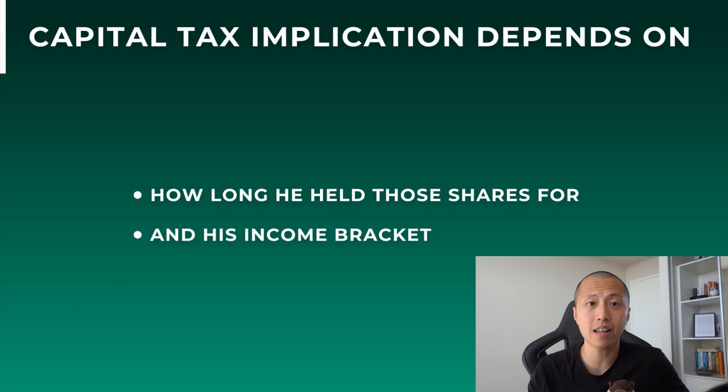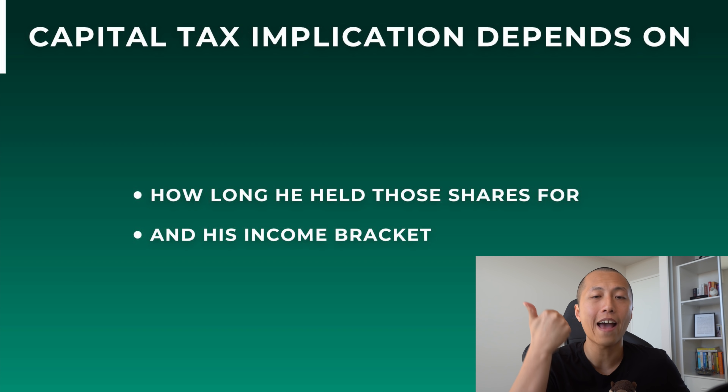For simplicity, we're going to use Otto as an example, and he only buys growth stocks with no dividends. Say Otto bought stocks and they go up in value — those are unrealized gains and there are no tax implications at this point. If he decides to sell those shares in the future for a profit, that's when there is a CGT implication. The amount of capital gains tax Otto has to pay depends on how long he has held those shares and his income bracket.